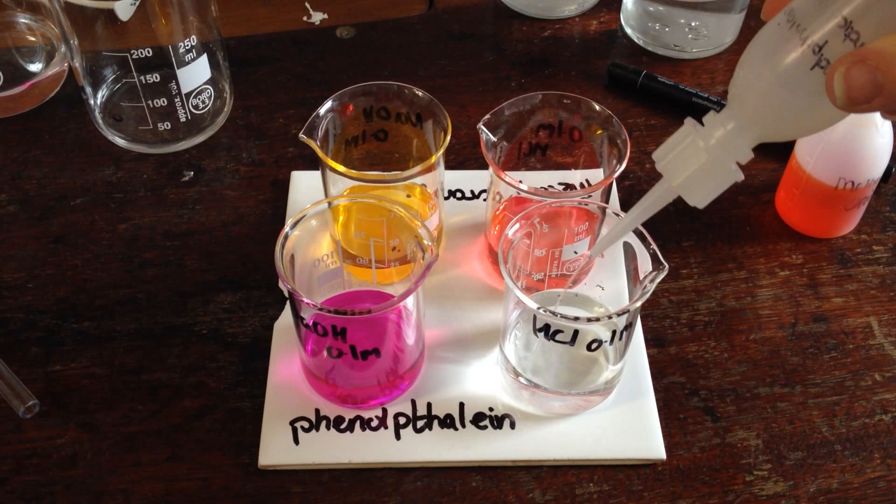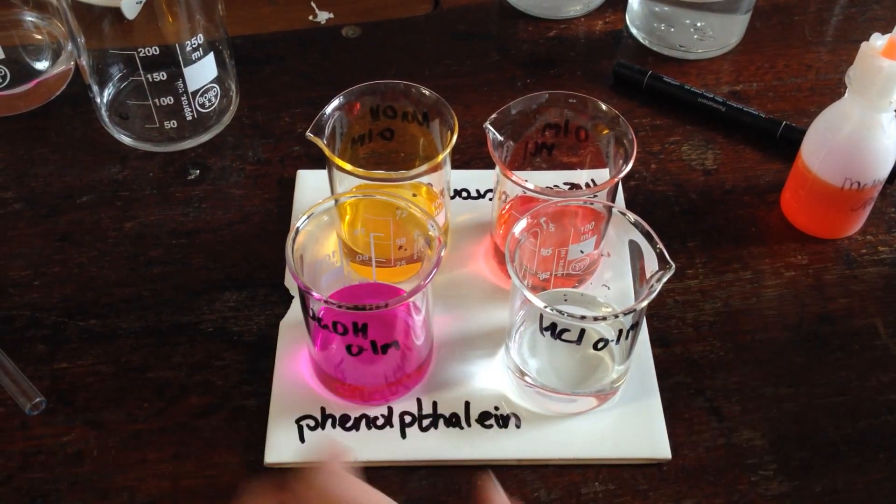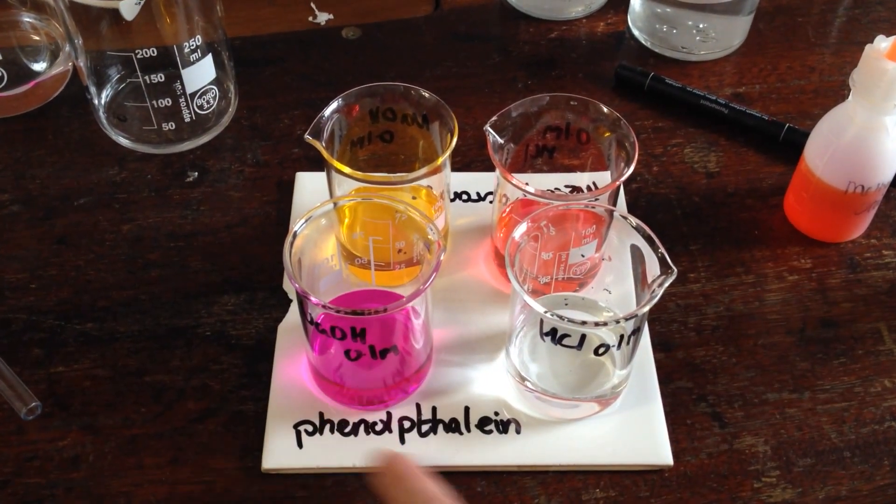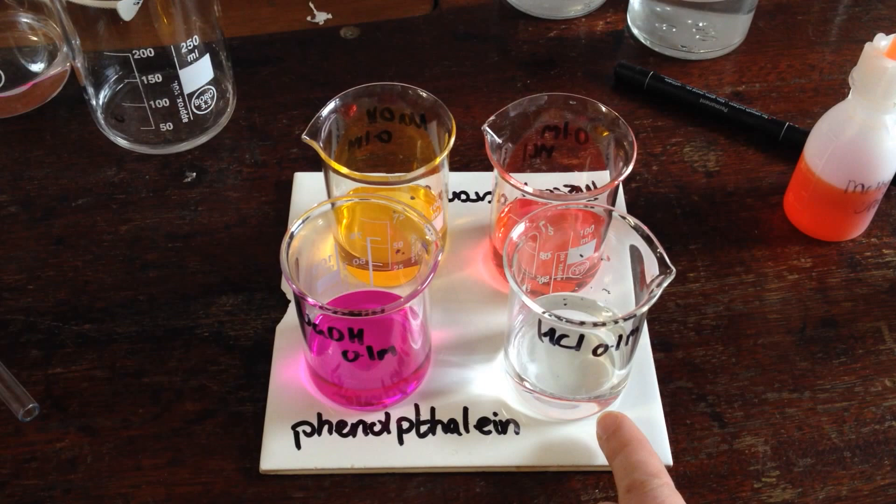Add in a few drops. We can see that phenolphthalein in alkaline is pink and in acid is clear.